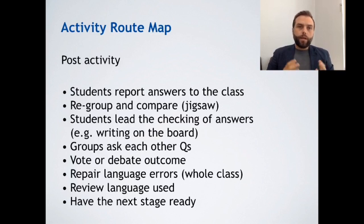Now you've closed the activity. It's a good idea to have one more step, which this is called the post activity. Often in this step, students report the answers to the class. They might report their findings or what they agreed and so on. You can regroup and compare. This is kind of like a jigsaw in a sense. Each member of the group goes and joins a new group and they have to share or compare their answers again. This is a nice way of extending or having like a stage two for an activity. Students can lead the checking of answers, so when you're reporting and checking what everybody was discussing, you can have students come up to the board writing their examples. Groups can ask each other questions. You can have group discussions across each other. You can vote or debate an outcome. You might collect all the ideas and then debate or vote on that.